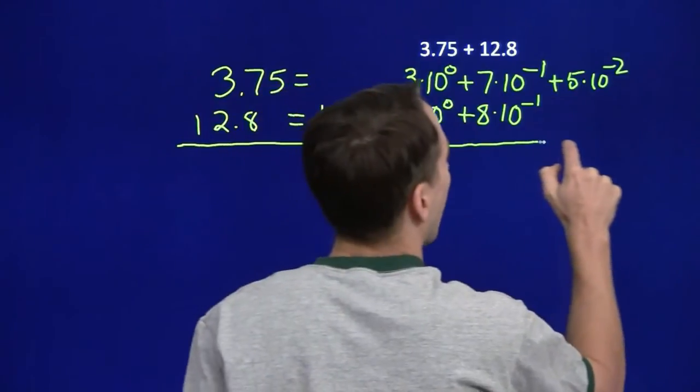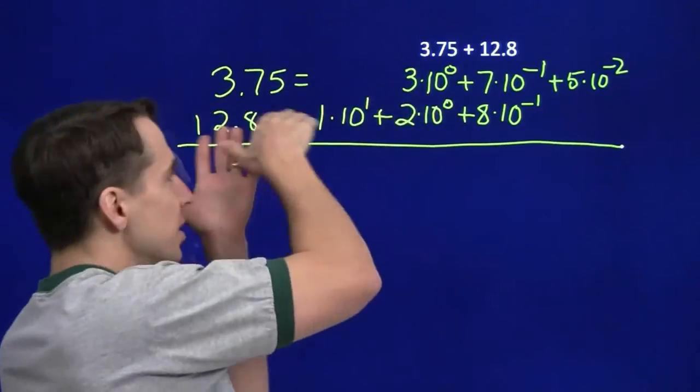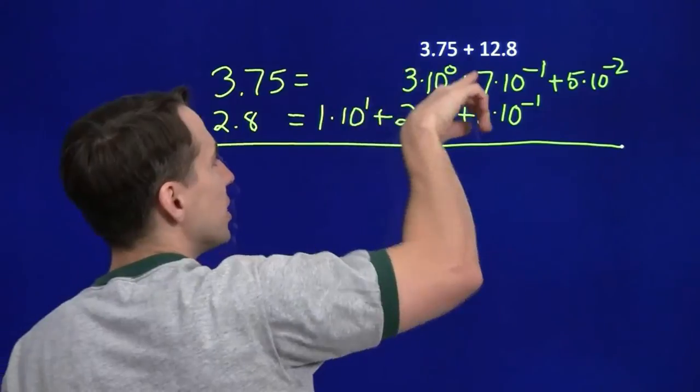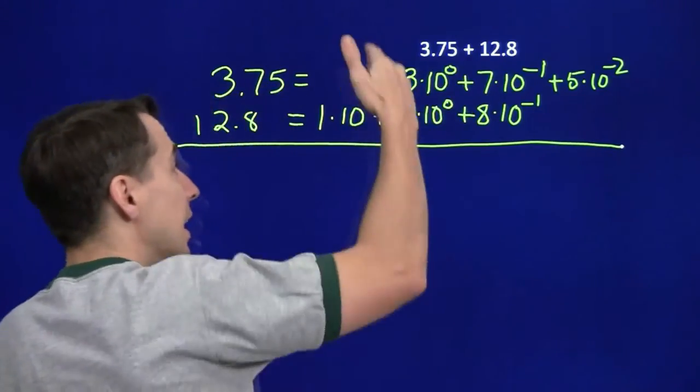Now we're going to add these up. All we've done here is broken out each of these decimals in terms of each of their places, each of the place values and powers of 10. Now we're going to add them up.